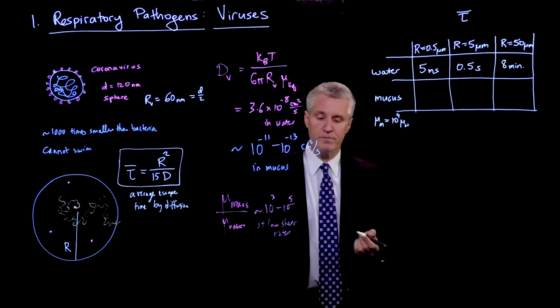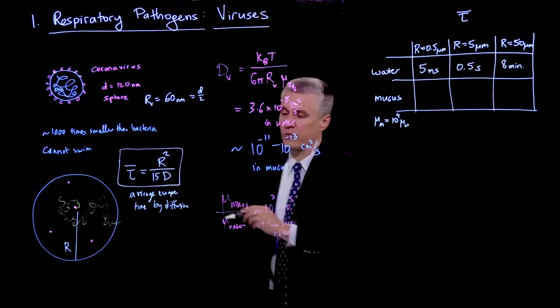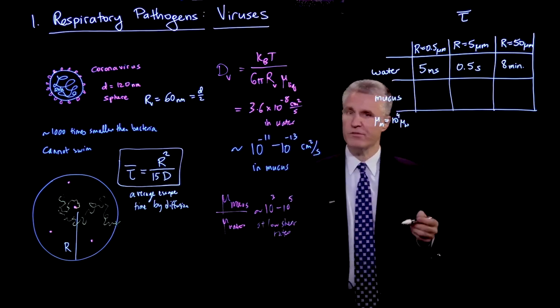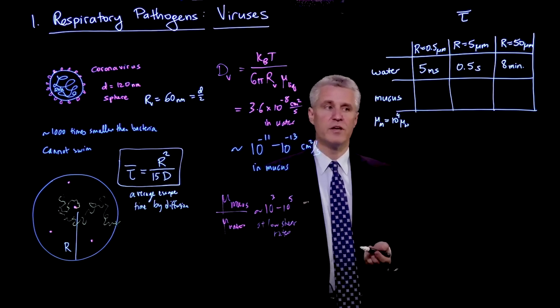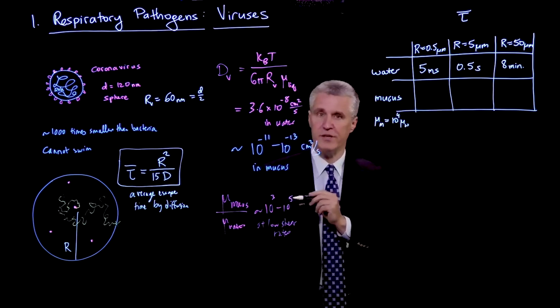Now, what if we're in mucus? So now we go in this direction. The timescale goes like 1 over D. And D goes like 1 over viscosity. So the timescale is proportional to viscosity. So we're getting this factor of 10 to the 4. That's a pretty big factor.